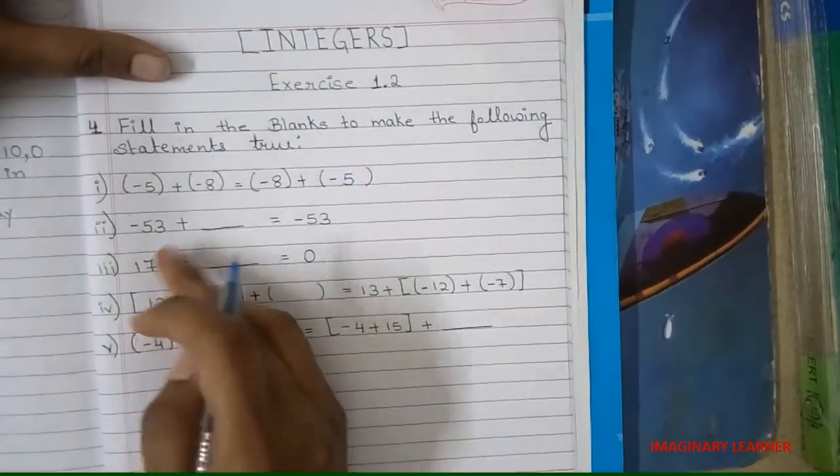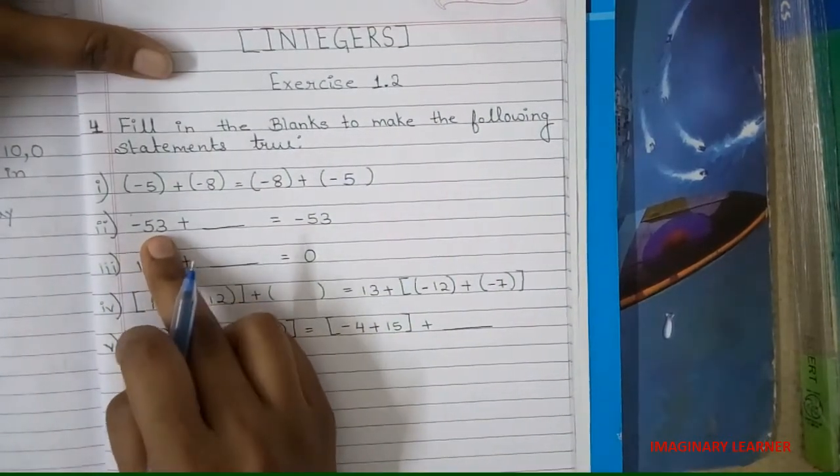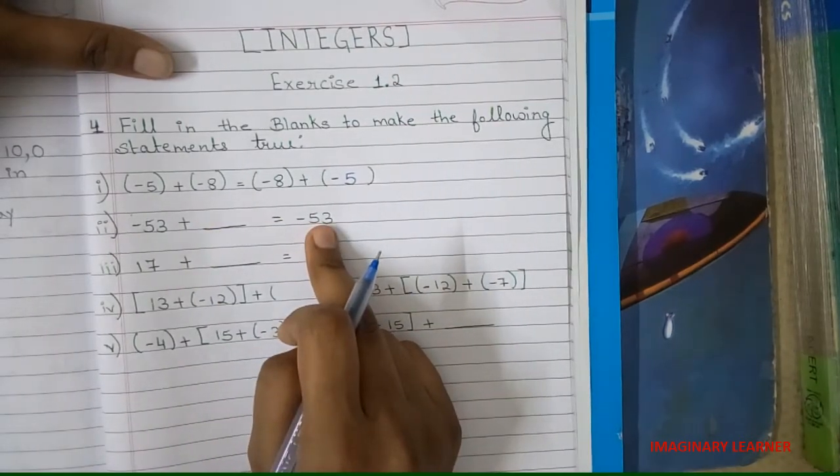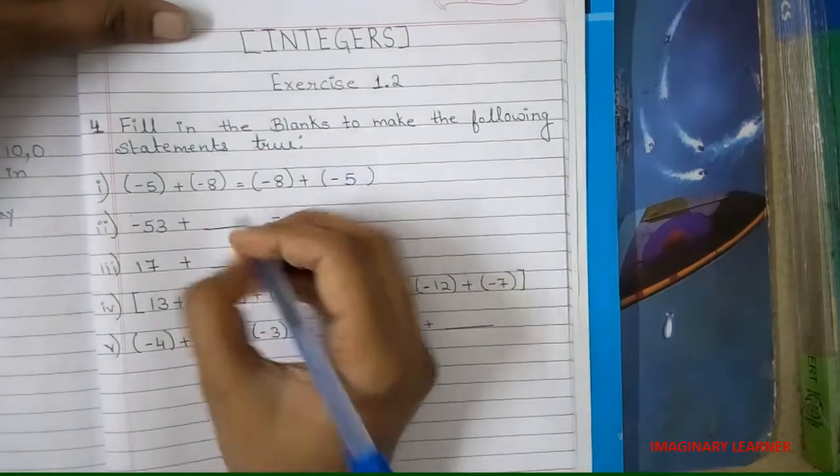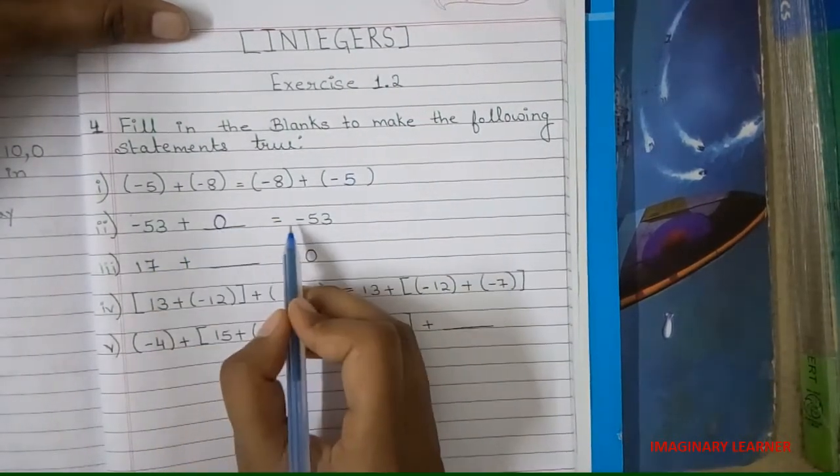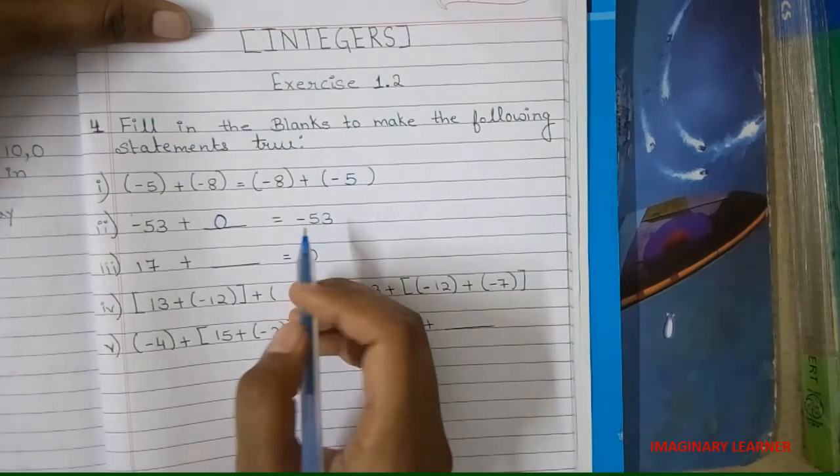Second: minus 53 plus blank equals minus 53. So here if we add what value, then the value will be the same on both sides? If I add 0, then the values will be the same.